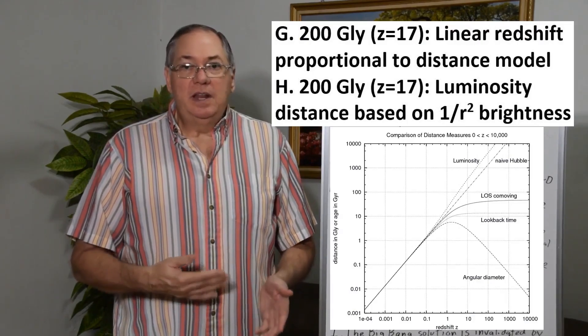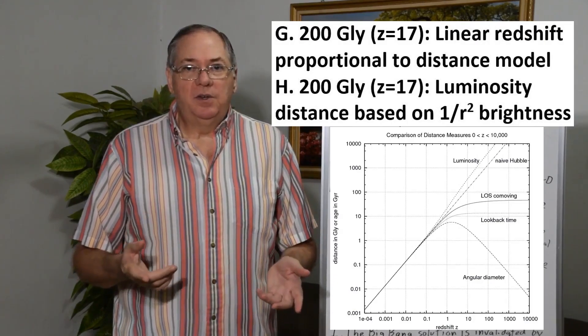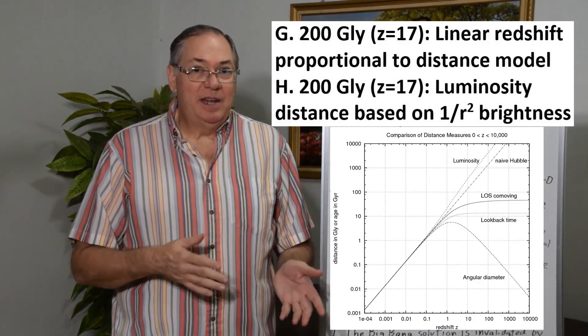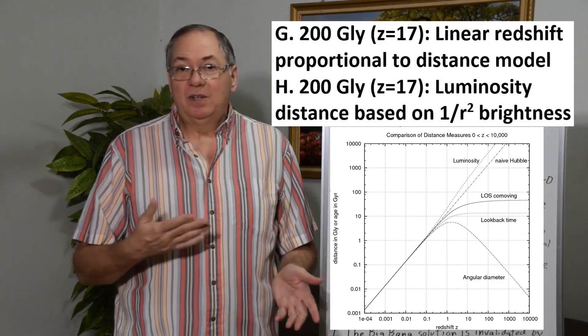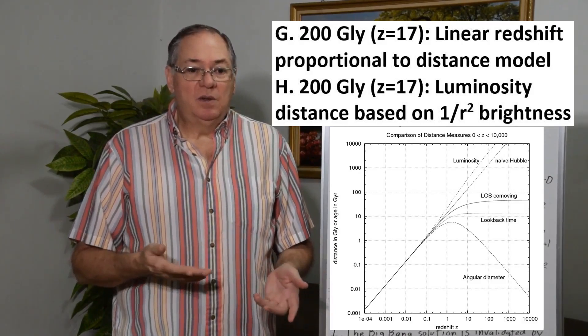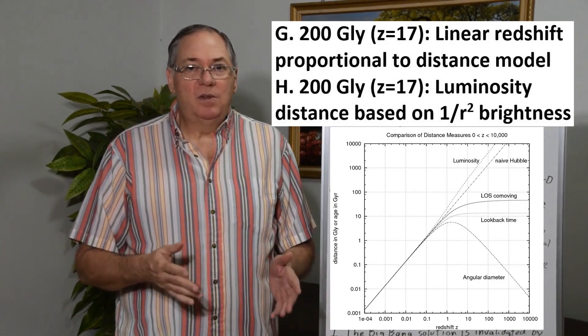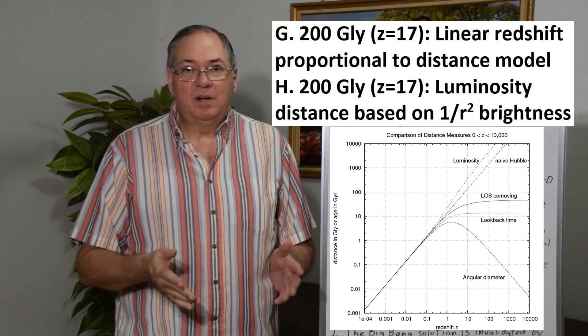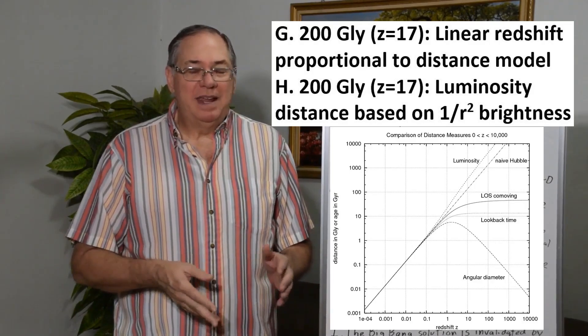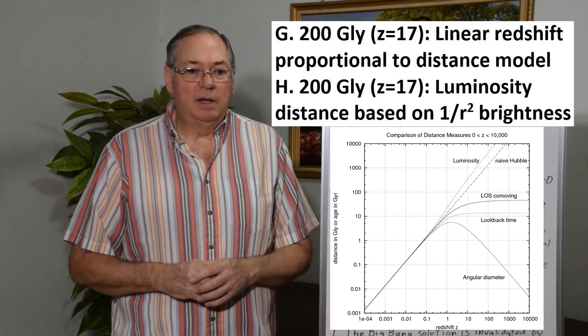But then if we use a linear approximation of the Hubble redshift, we get to that same Z equals 17 galaxy being closer to 200 billion light years away. And that's also close to the luminosity distance model, which is only limited by the 1 over R squared law. And that would be an idealized type of redshift model going on.